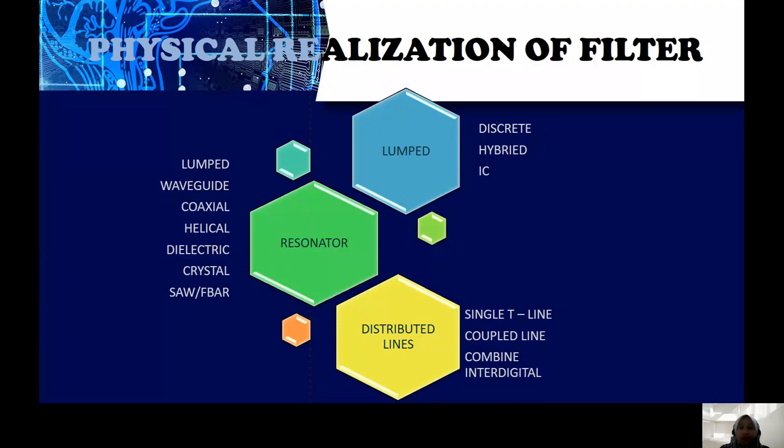Basically, the physical realization of the filter has three types which is Lumped Elements, the Resonator, and the Distributed Lines.